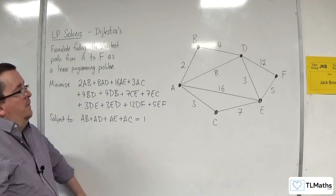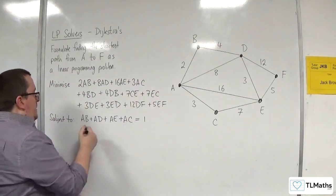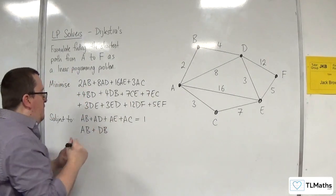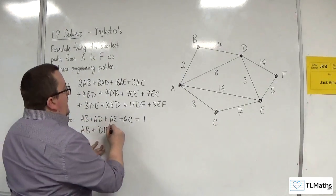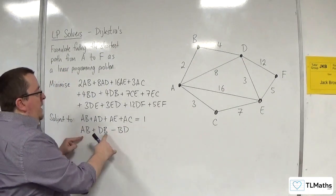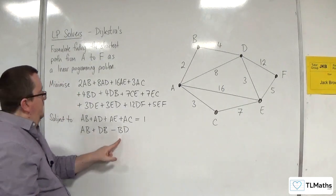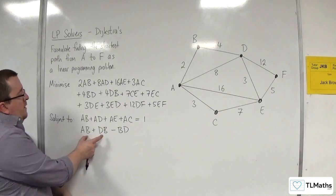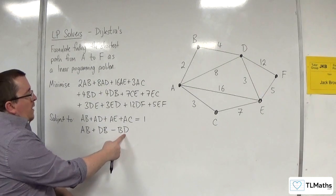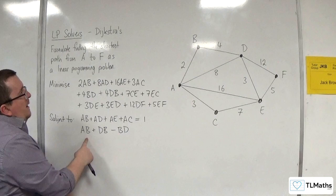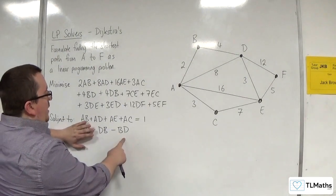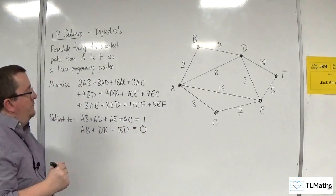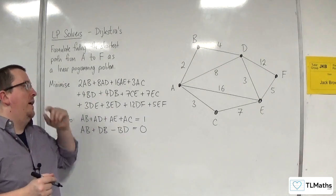Then we want one constraint for each of the other vertices. So for B, now the routes into B can either be AB or, because I'm leaving it as undirected, DB. So there are those two routes into B. But the only route out of B is BD. So we add together the routes in, take away the routes out. There's only that one route out. So either all of these are zero, in which case I don't go via B, or one of these is 1 and that one is 1. And you can see that if I included DB, so that was 1 and that was 1, I'd be automatically going back to BD, because I don't want to go back to A. There is no route here back to A. So either way, this is going to be equal to zero. So routes in take away routes out equals zero for each of the vertices that is not the starting vertex.